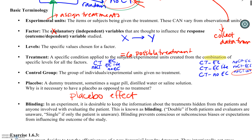Along with the placebo: whenever you keep people from knowing whether they're in a treatment or a control group, we call it blinding. Single blinding is when the patient — or experimental unit — is unaware. Double blinding is when both the experimental unit and the person recording the results are unaware.